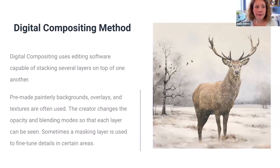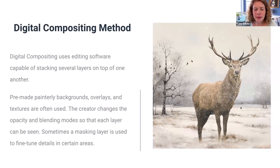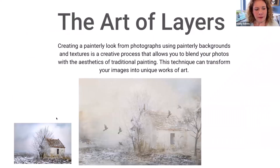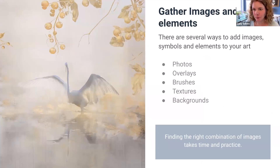Digital compositing lets you unleash creativity and produce visuals not previously possible with traditional cameras. You can achieve a painterly look from photographs using this method without having to digitally paint the pixels. You need software capable of stacking several layers — Luminar is one, Photoshop is one, but Lightroom is not because it doesn't support layers. You'll use pre-made painterly backgrounds, overlays, and textures along with masking, blending modes, and opacity adjustments.